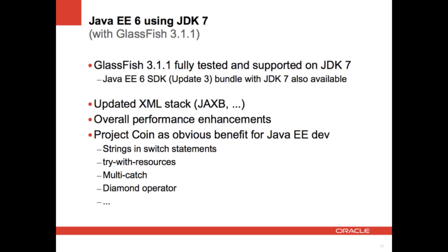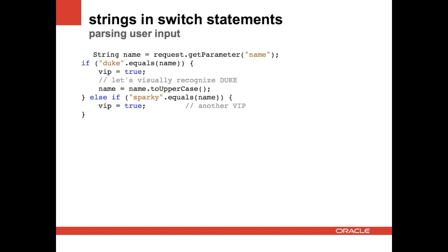With Project Coin, you can start using strings in switch statements. Here's an example — probably in a servlet where the request is the servlet request. We get a parameter called name, and if we're talking to Duke, he's a VIP and we uppercase his name. If it's Sparky, it's another VIP but we leave his name alone. This is existing code using if/else if/else statements.